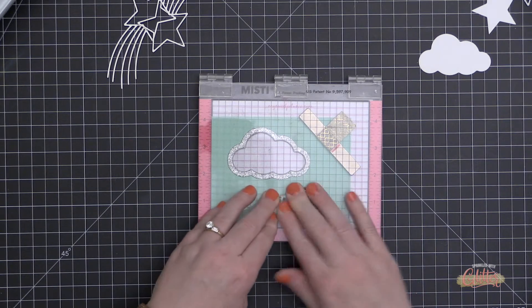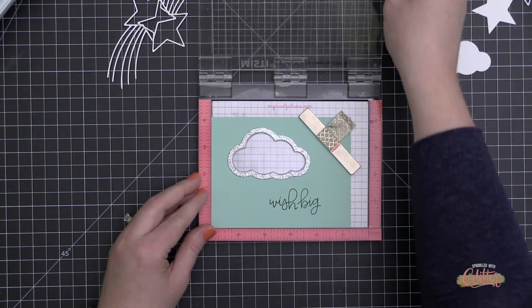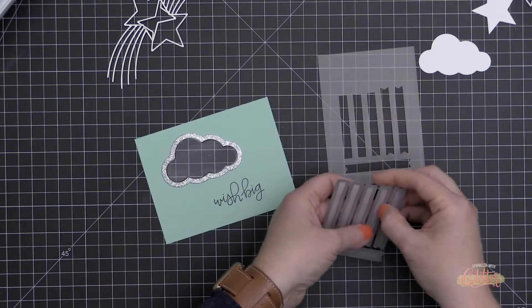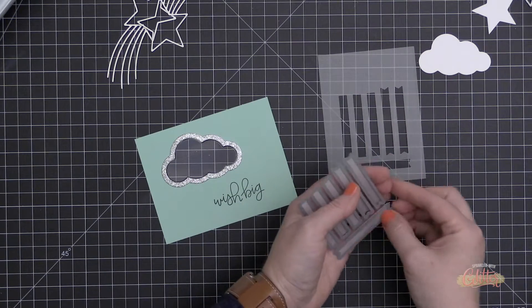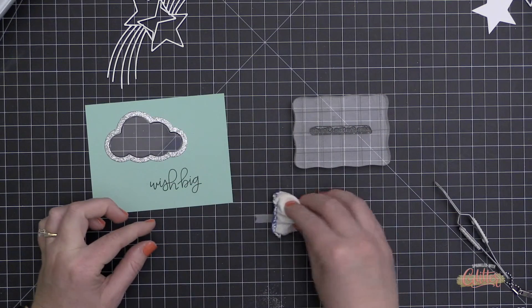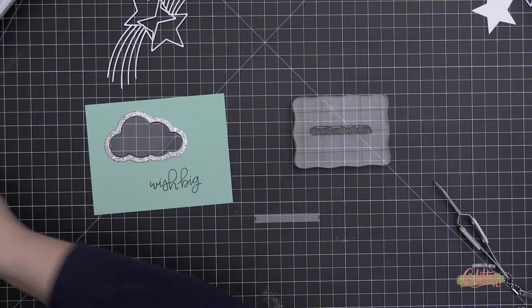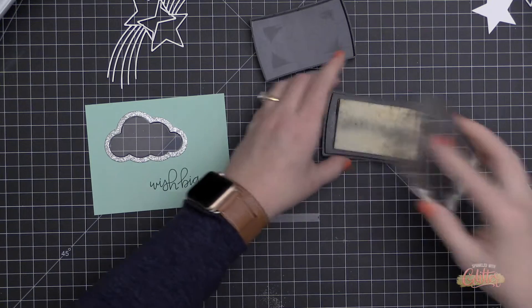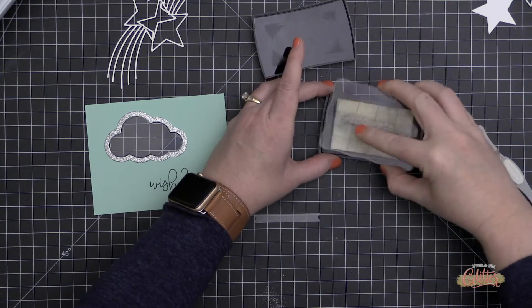You can see here I positioned this Wish Big sentiment that is from the Handwritten Happiness stamp set from My Favorite Things. I positioned that on my MISTI, and I stamped it in some VersaFine Clear black ink onto my card front.